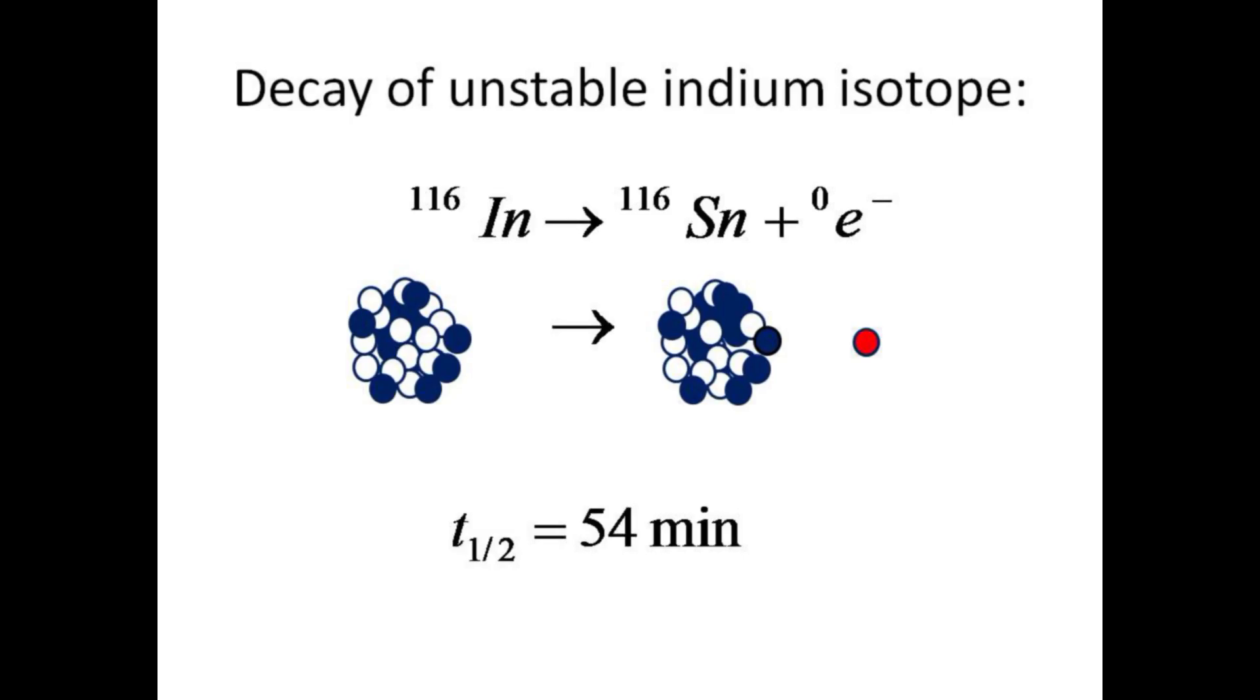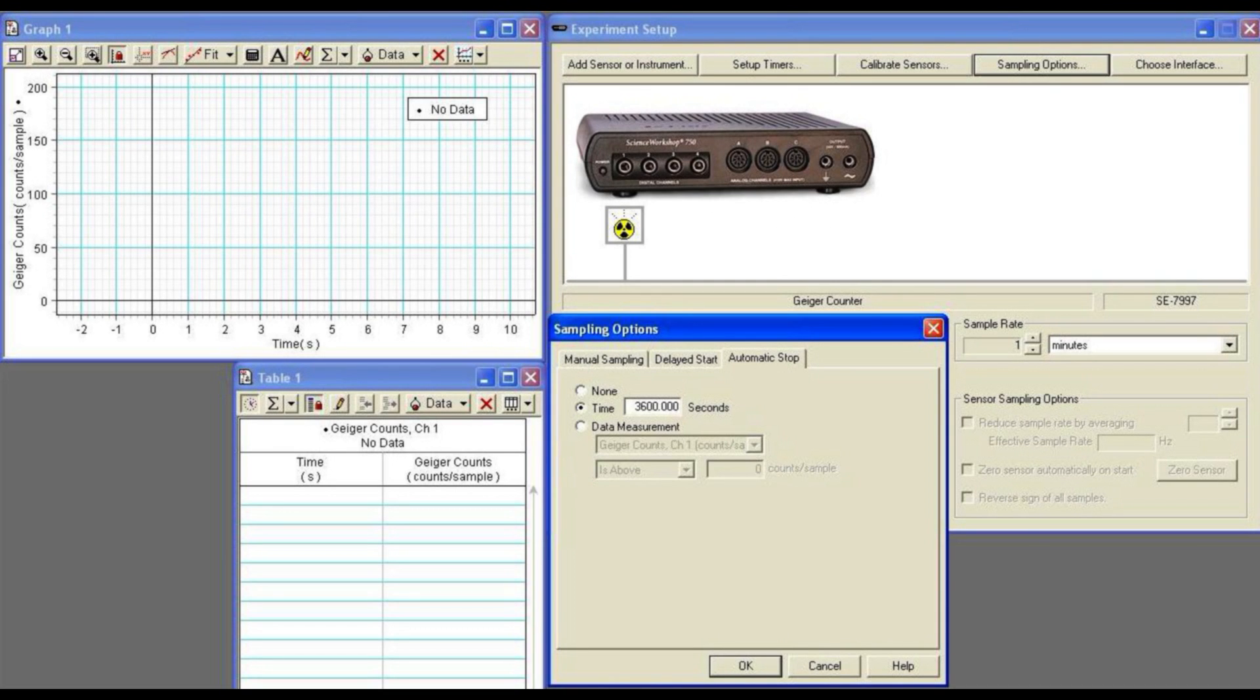The unstable isotope of indium will decay into tin with the emission of a beta particle. The half-life for this decay process is about 54 minutes. Your goal is to monitor counts with the Geiger counter to measure this half-life. In Data Studio, set the sample rate to 1 minute and the stop time to 3600 seconds, or 1 hour.